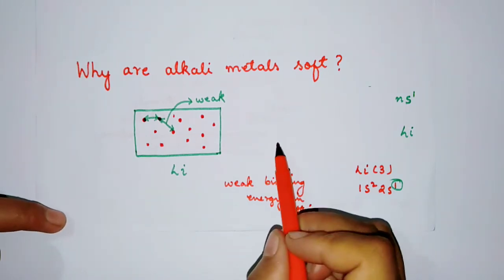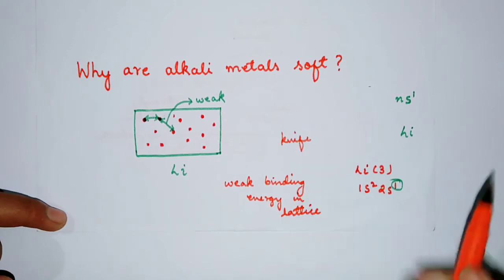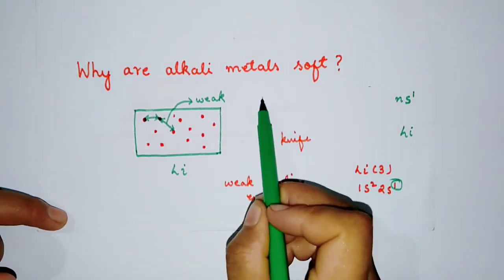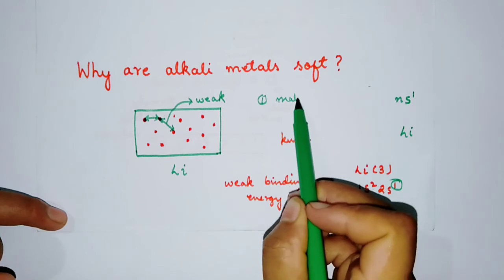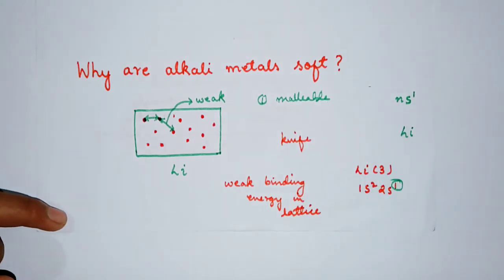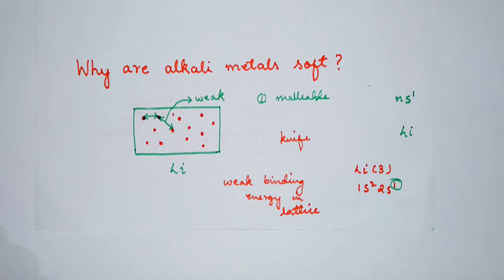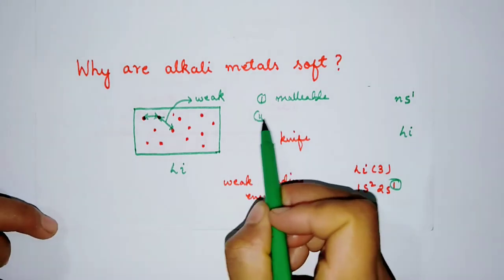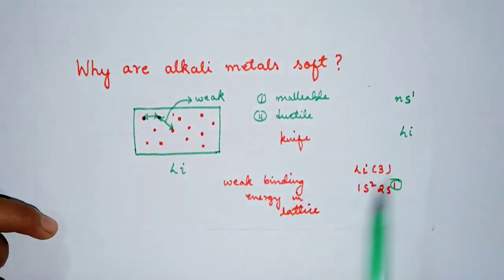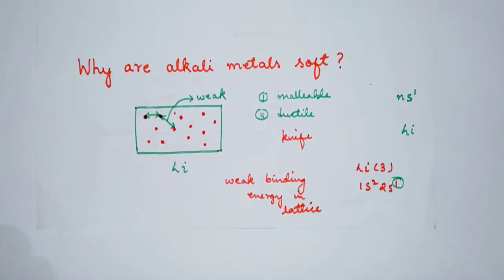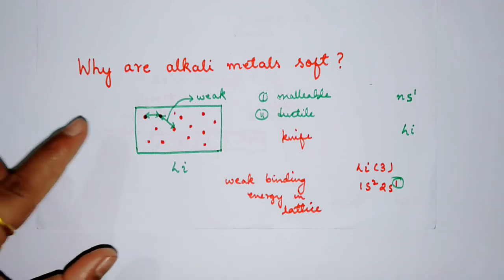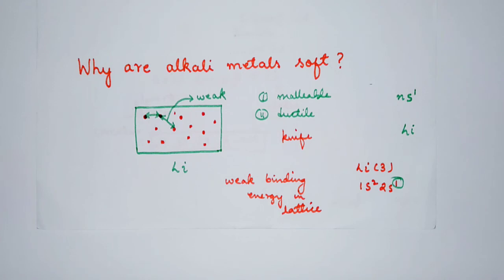That is why they are soft — so soft that they can be cut with a knife. One more thing: they are also malleable, meaning you can break them into thin sheets, and also ductile, meaning you can draw them into wire. This is one of the physical properties of the alkali metals, and that is the explanation behind why alkali metals are soft.